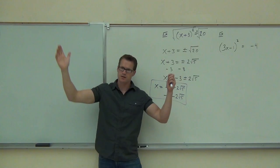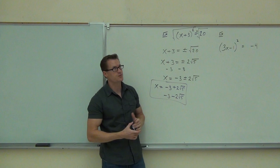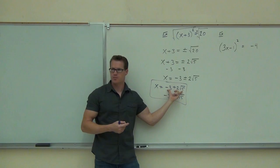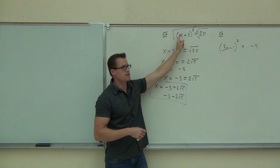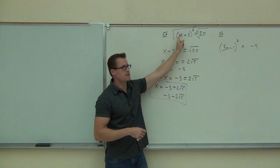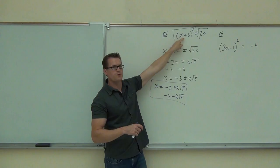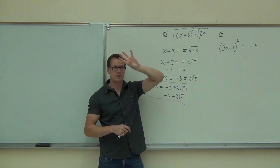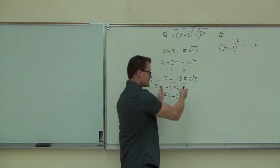The 3 can't be subtracted from the 2 root 5 since there's no like radical, so it goes in front: x equals negative 3 plus or minus 2 root 5. Our two solutions are negative 3 plus 2 root 5, and negative 3 minus 2 root 5. If you take negative 3 plus 2 root 5 and add 3 to it then square it, you'd get 2 root 5 squared, which is 4 times 5 equals 20. It works.